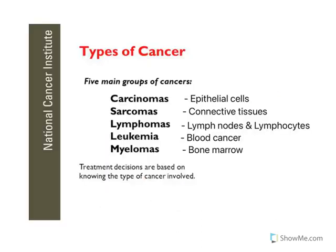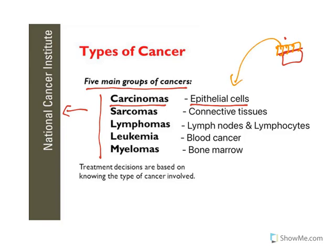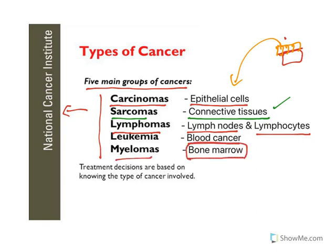There are five main groups of cancers according to the National Cancer Institute. Carcinomas occur in epithelial cells — the cells that cover all kinds of surfaces; when these get cancer it is known as carcinoma. Sarcoma occurs in connective tissues such as bones, tendons, and adipose tissue. Lymphoma occurs in lymph nodes, spleen, thymus, and lymphocytes. Leukemia means blood cancer. Myeloma — when cancer occurs in bone marrow, it is known as myeloma.